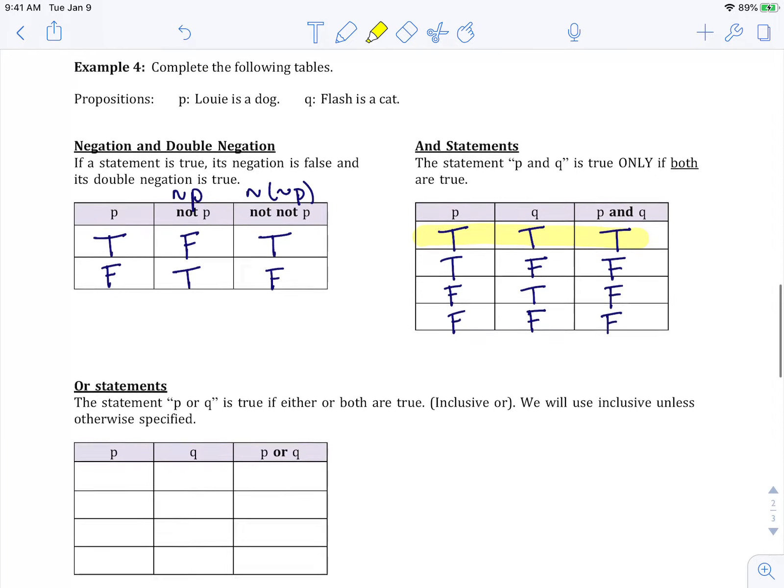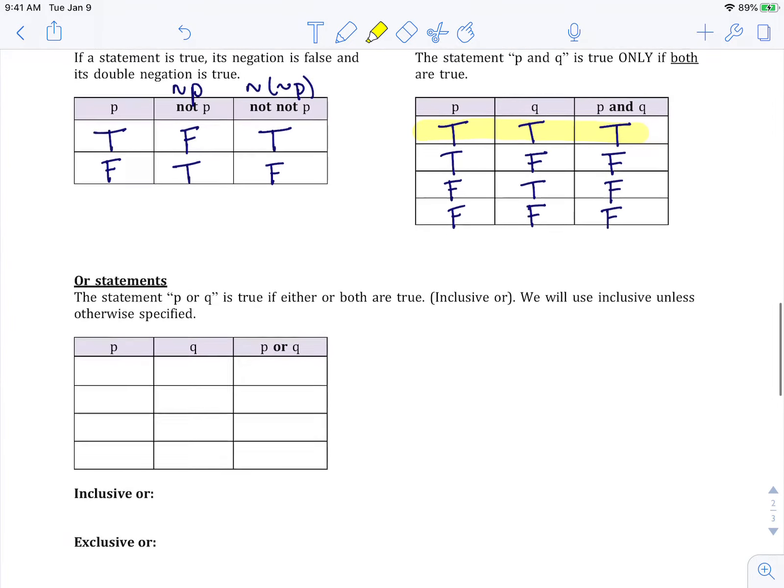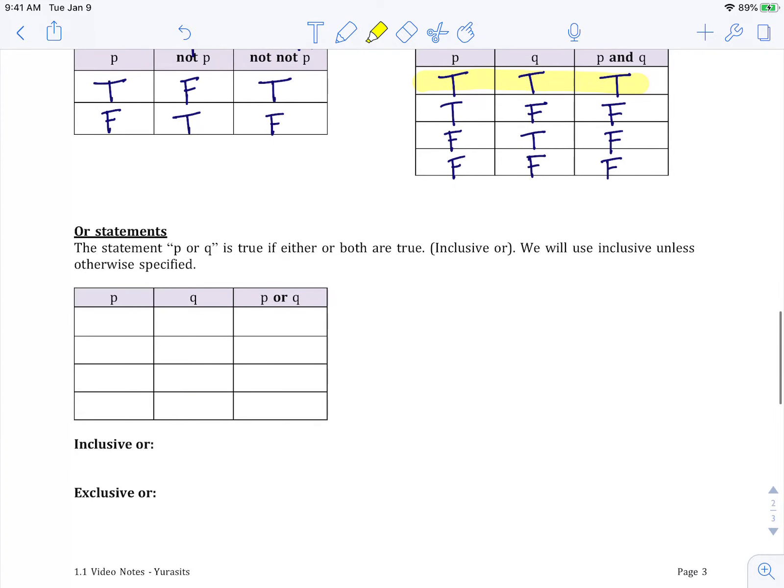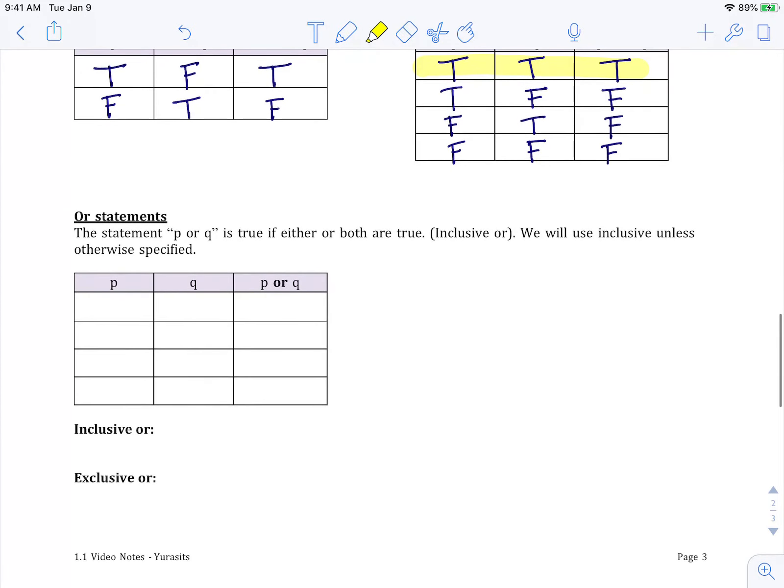Now the OR is true if either or both are true. Now this is known as an inclusive OR. This is discussed in your text, but let's make a quick note of it. Inclusive OR means either or both. Exclusive means just one. So a good example of that is when you order something at a restaurant and they say fries or salad. Sure, you could pick both, but you'll have to pay for one of them, right? So that's not an inclusive OR. It doesn't include both.